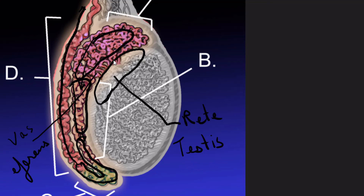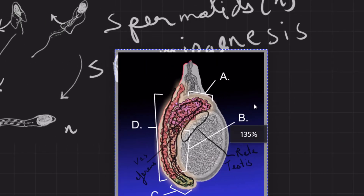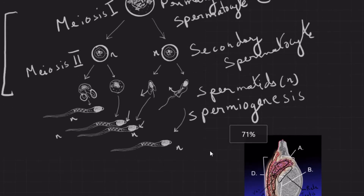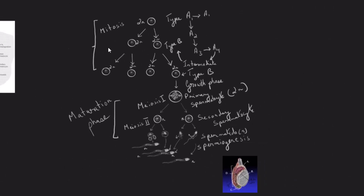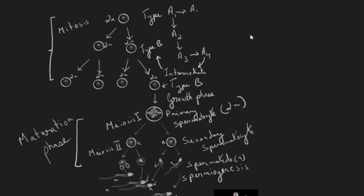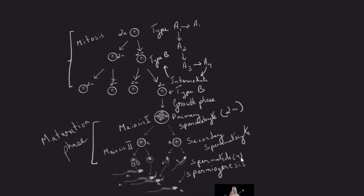The spermatozoa still undergo further development within the epididymis. To review: the multiplication phase involves spermatogonia dividing by mitosis; the growth phase involves type B spermatogonia accumulating cytoplasmic and nuclear material to become primary spermatocytes; the maturation phase involves the primary spermatocyte dividing twice by meiosis I and meiosis II to form secondary spermatocytes and spermatids. The spermatids then undergo spermiogenesis.